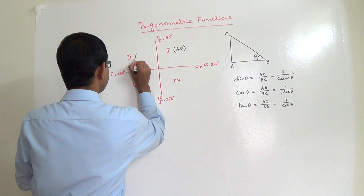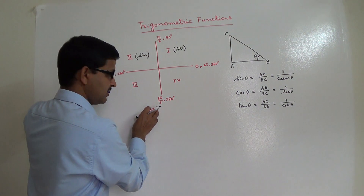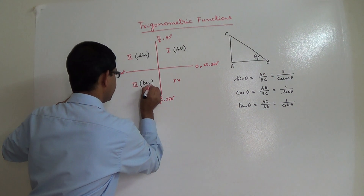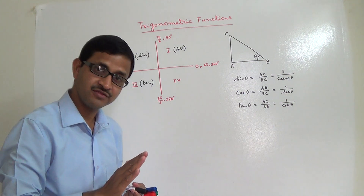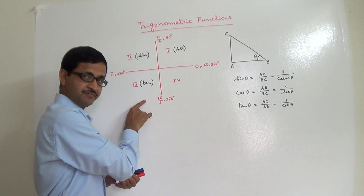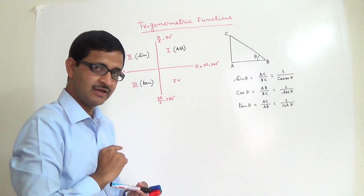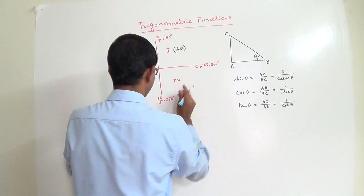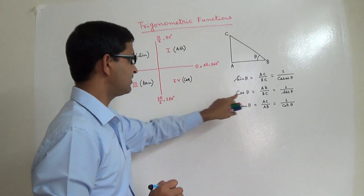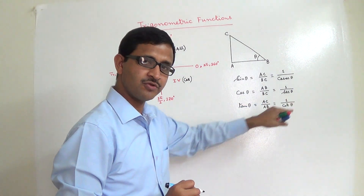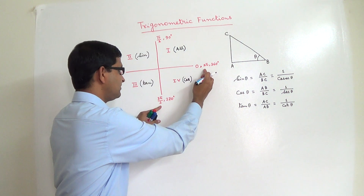In the third quadrant, between π and 3π/2, tan is positive — which also means cot is positive — but all other trigonometric functions are negative. In the fourth quadrant, cos is positive and therefore sec is also positive, but all other trigonometric functions are negative for any angle between 3π/2 and 2π.